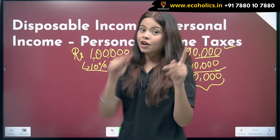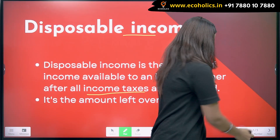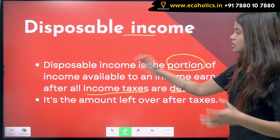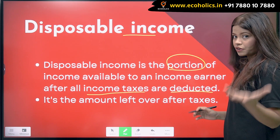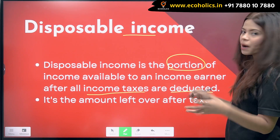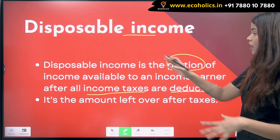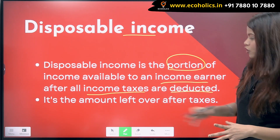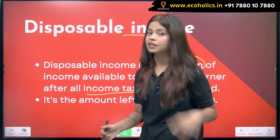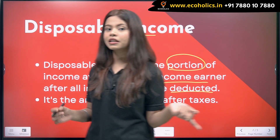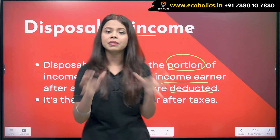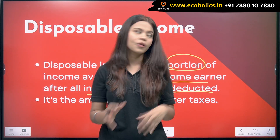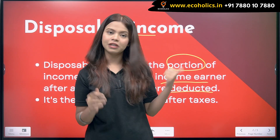Let's go back to the slide and read. Disposable income is the portion of income available to an income earner after all the income taxes are deducted. So after giving tax from one lakh rupees, your disposable income is ninety thousand rupees.